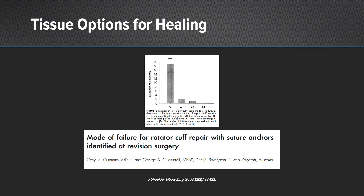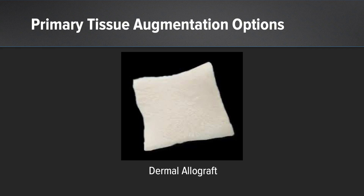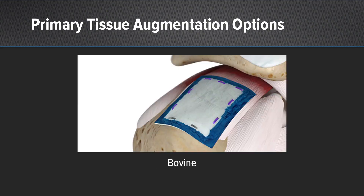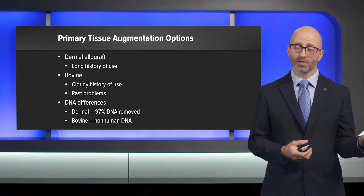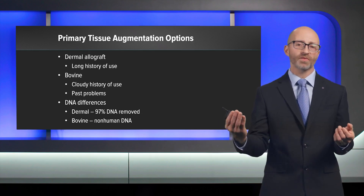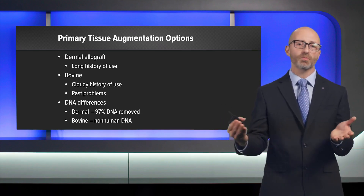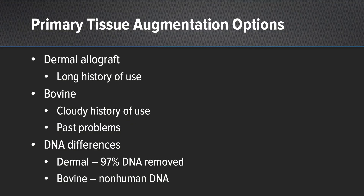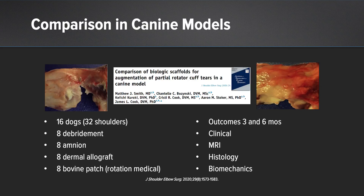Now let's look at tissue options. Remember the mode of failure: the weak link in rotator cuff repair is the tissue — suture pulls through tissue rather than anchors pulling out of bone in the majority of cases. So we want to optimize both fixation and biology. We have two primary options: dermal allograft and xenograft. Dermal allograft has a long history of use; xenograft has a cloudy history with past problems reemerging. There are also differences in DNA — dermal allograft has 97% of DNA removed, while xenograft patches contain non-human DNA.